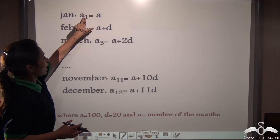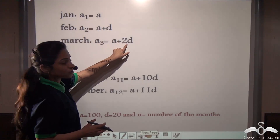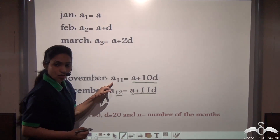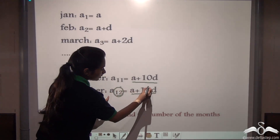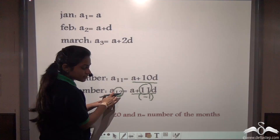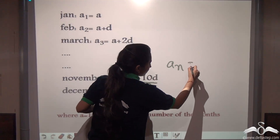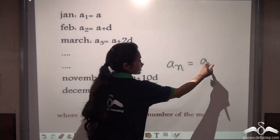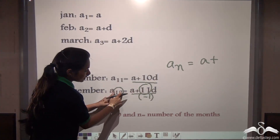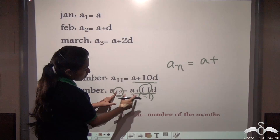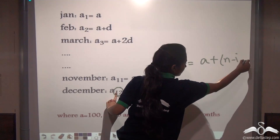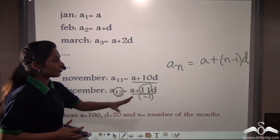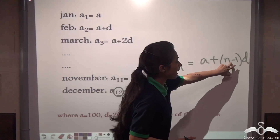Let's recall: A1 is A, A2 is A plus D, A3 is A plus 2D and so on, A11 is A plus 10D, A12 is A plus 11D. So what can you say? This term is actually one less than the term number. So if we have to find AN, A will be constant — that is 100 rupees was constant — plus one term less than this, following the same pattern. So it is N minus one into D.